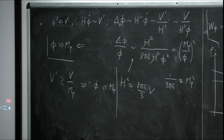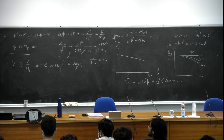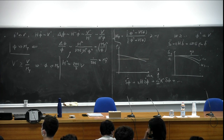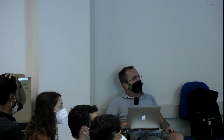There is also the question of φ̇². It must be much smaller than V — so it is greater than zero but much less than V.